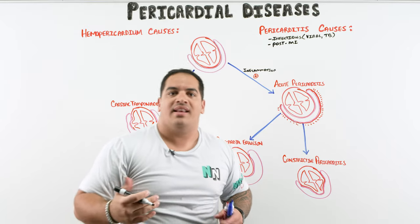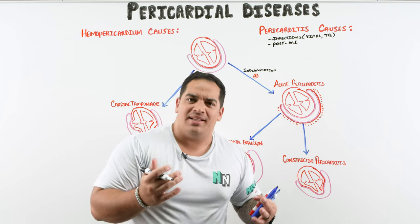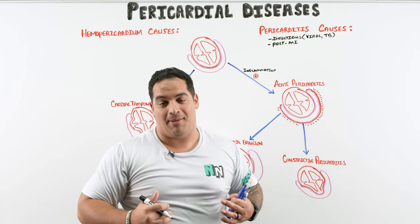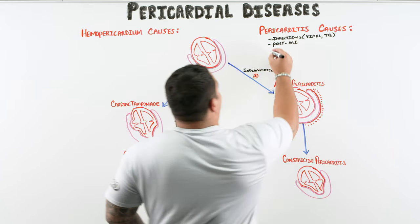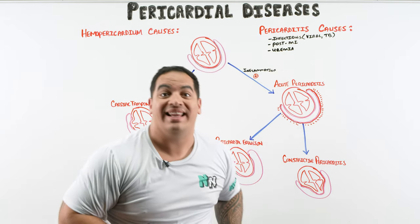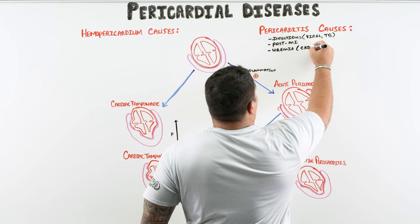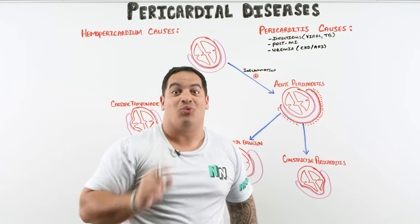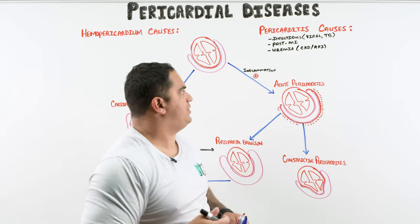Another cause is post-MI: if a patient has a STEMI or NSTEMI, it can create local inflammation of the pericardium. If it's one to three days after the MI it's called fibrinous pericarditis; if it's 14 days or more it's Dressler syndrome. Uremia is also a really big one — in patients with chronic kidney disease or acute kidney injury where BUN and creatinine are very high, that can cause uremic pericarditis.